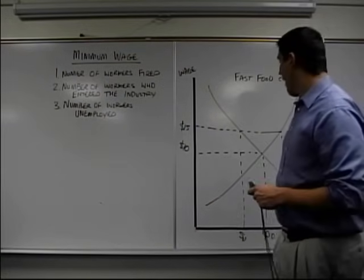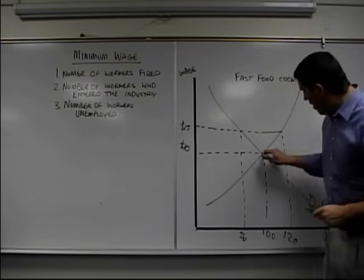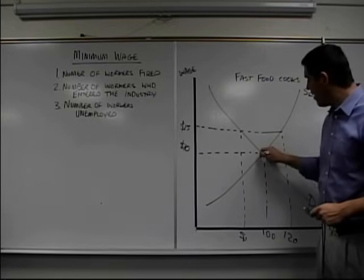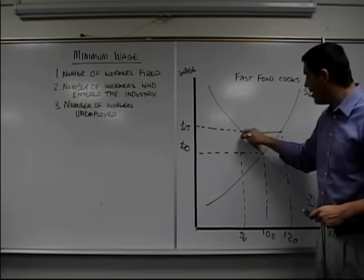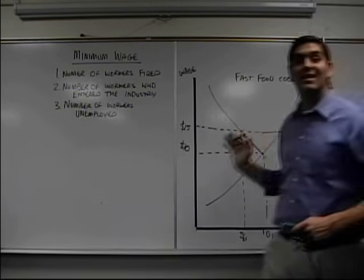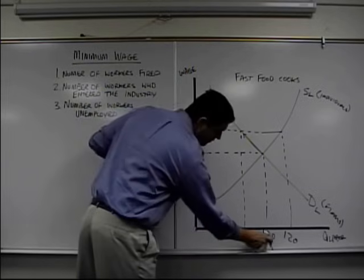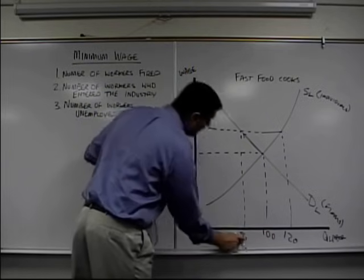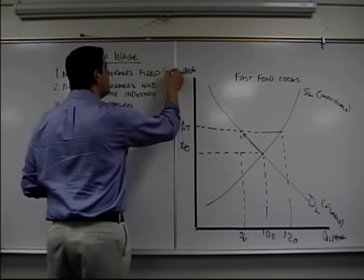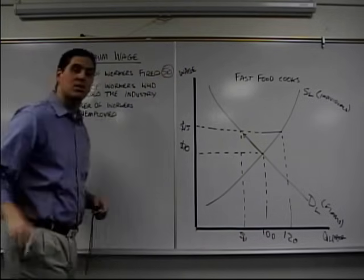All right — how'd you do? Number of workers fired: well, this is where we were before. When the wage increased, firms decided to hire fewer workers. The quantity demanded decreased, and so you went from 100 to 50. That means 50 workers ended up losing their job.